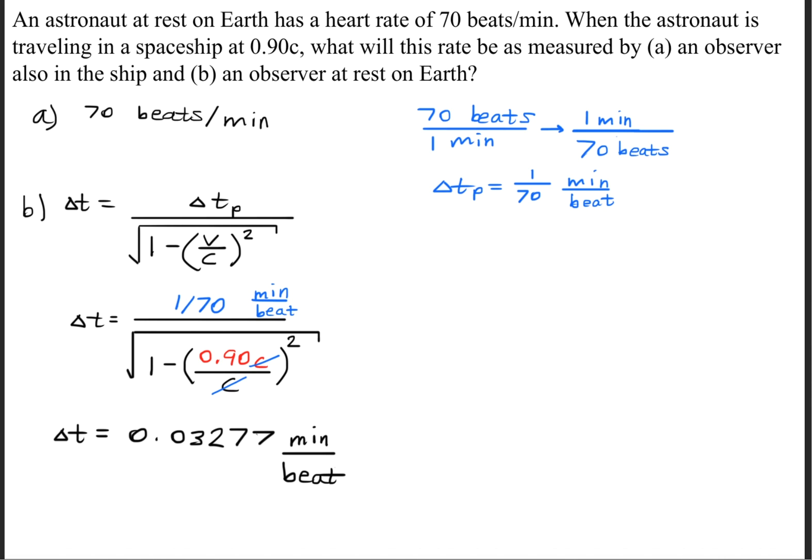Now the question is asking what will the rate be, so we need it in beats per minute. We'll invert this Δt value, so we get 1 divided by 0.03277, and that gives us the answer of 30.5 beats per minute.